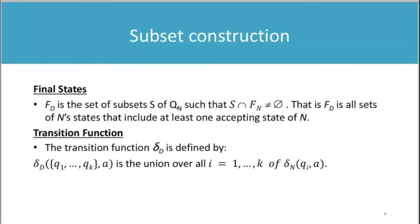Now final states: how we will decide the final state? The method is the same as what we have seen in the previous method. FD is the set of subsets S of QN such that S intersection FN is not equal to empty. That is, FD is all sets of N states that include at least one accepting state of N.